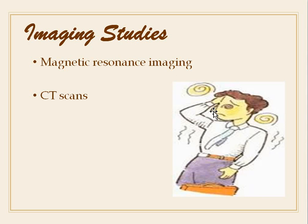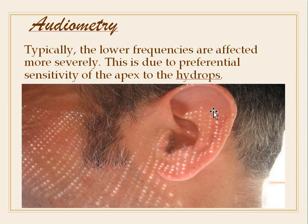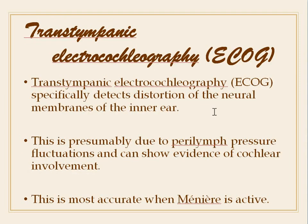Imaging with MRI and CT scans can be done. On audiometry, lower frequencies are typically affected more severely due to the preferential sensitivity of the apex to hydrops. Trans-tympanic electrocochleography detects distortion of neural membranes of the inner ear, presumably due to endolymph fluctuations and evidence of cochlear involvement, and is most accurate when Meniere's disease is active.